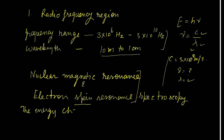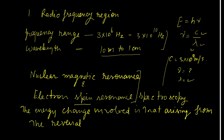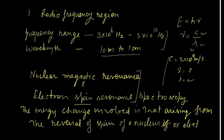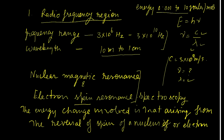The energy change involved in the radio frequency region arises from the reversal of the spin of a nucleus or electron. In this particular frequency region, the energy is of the order of 0.001, and the energy range is 0.001 to 10 joules per mole.